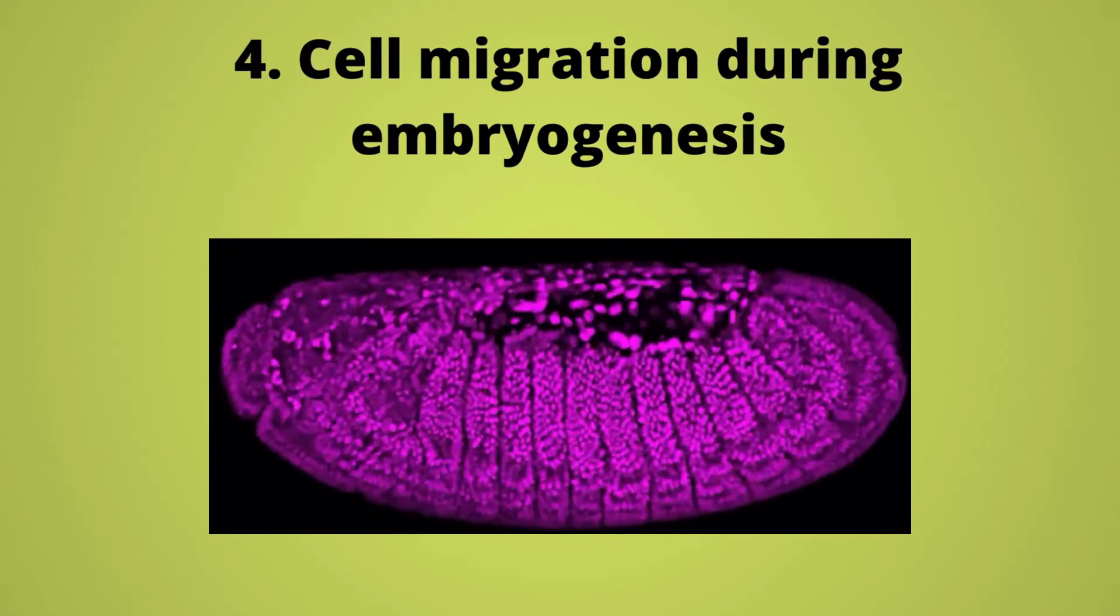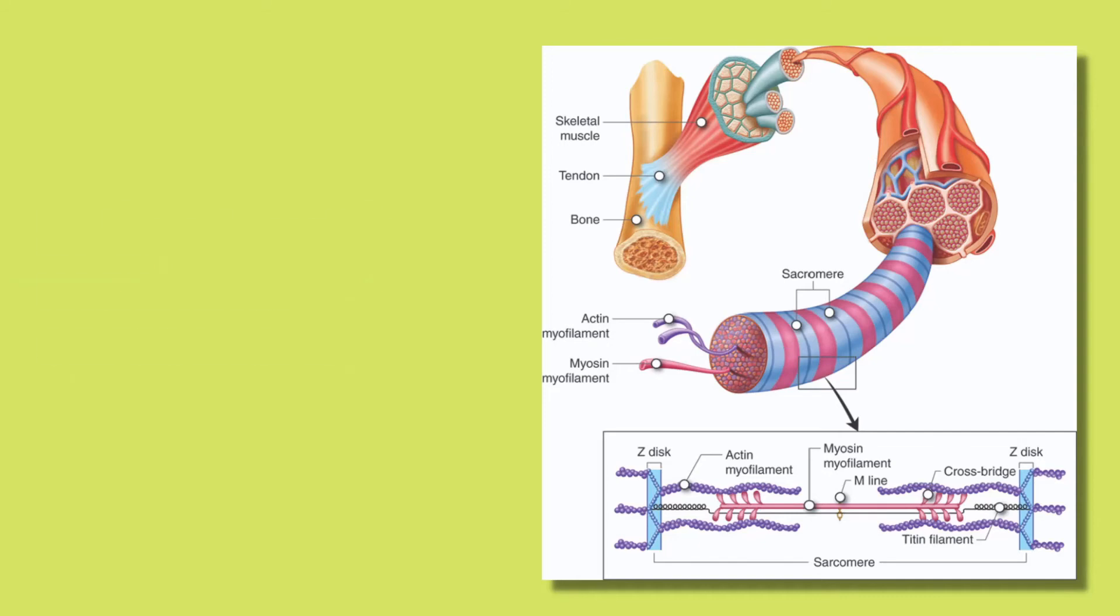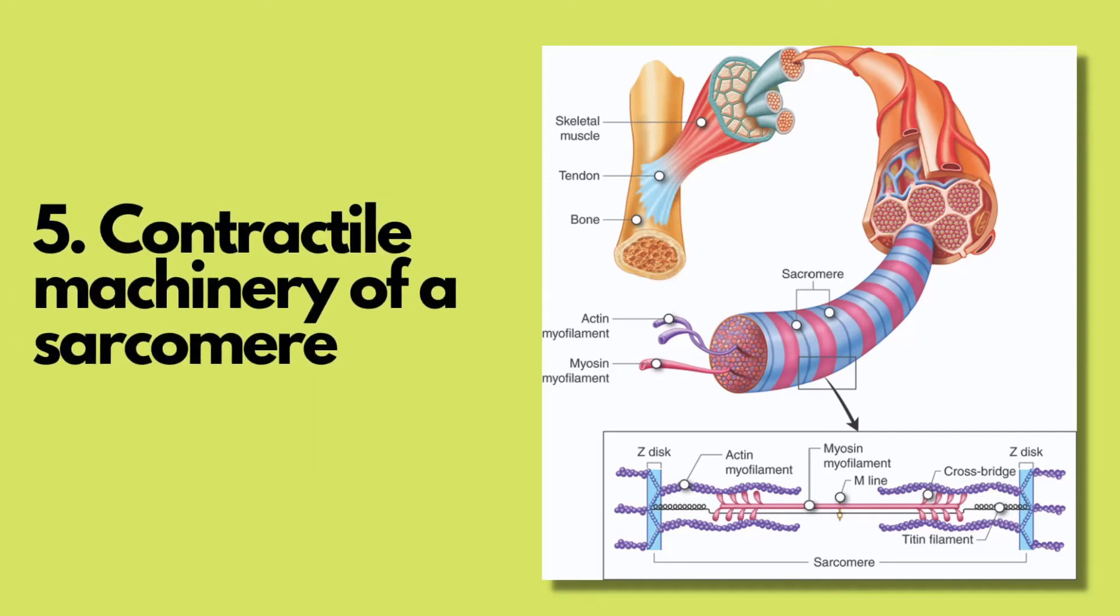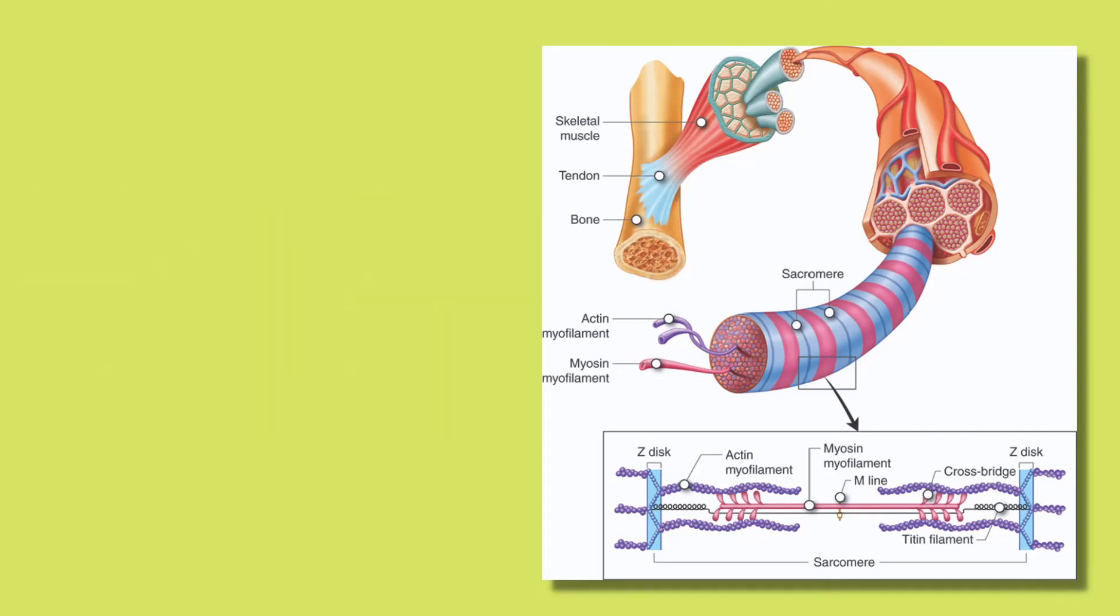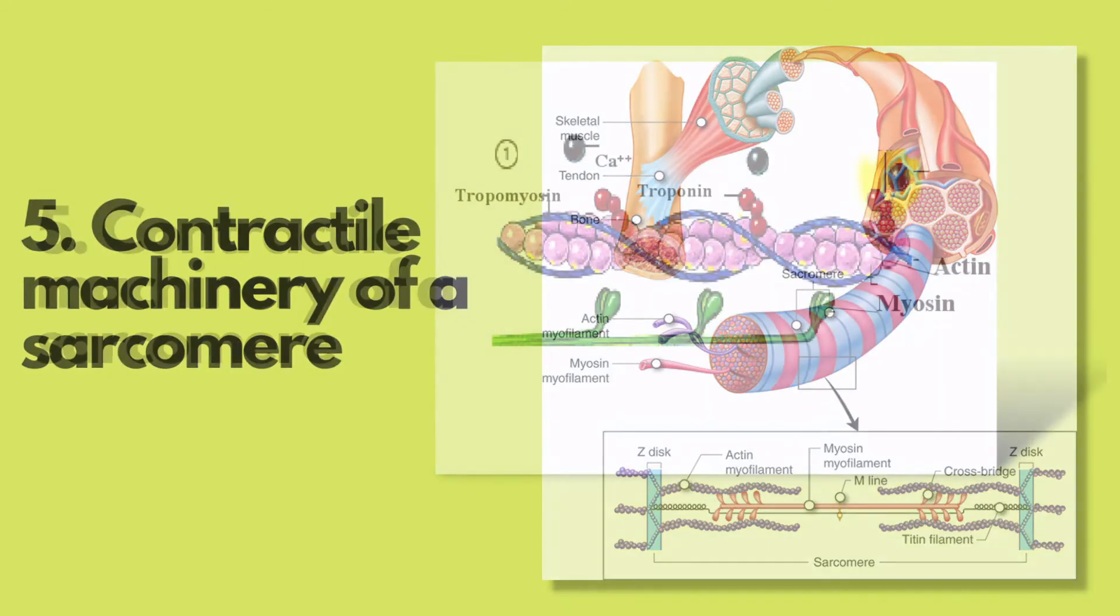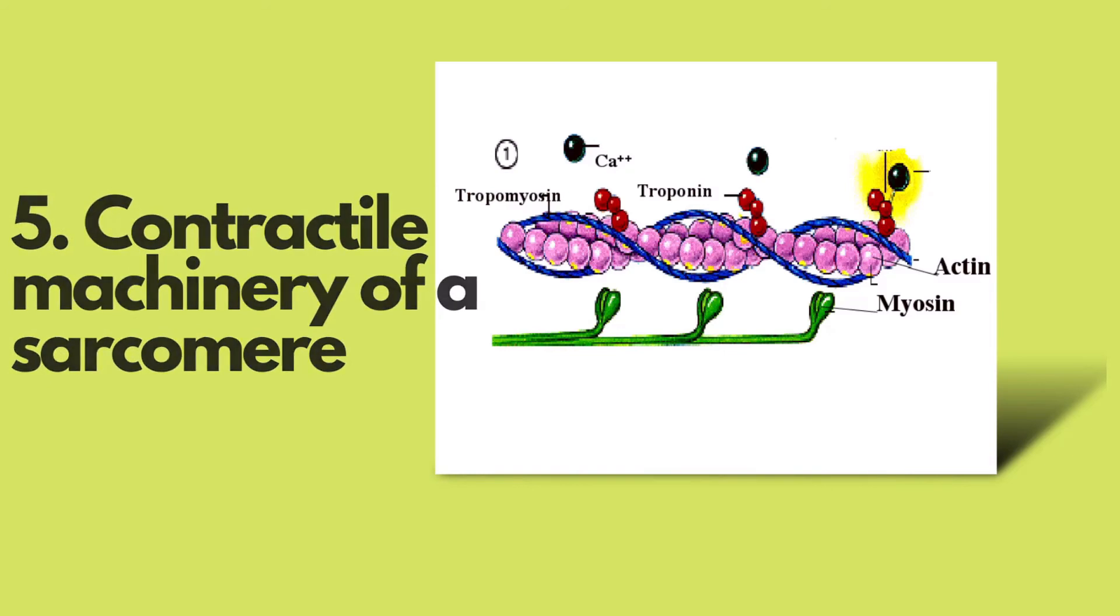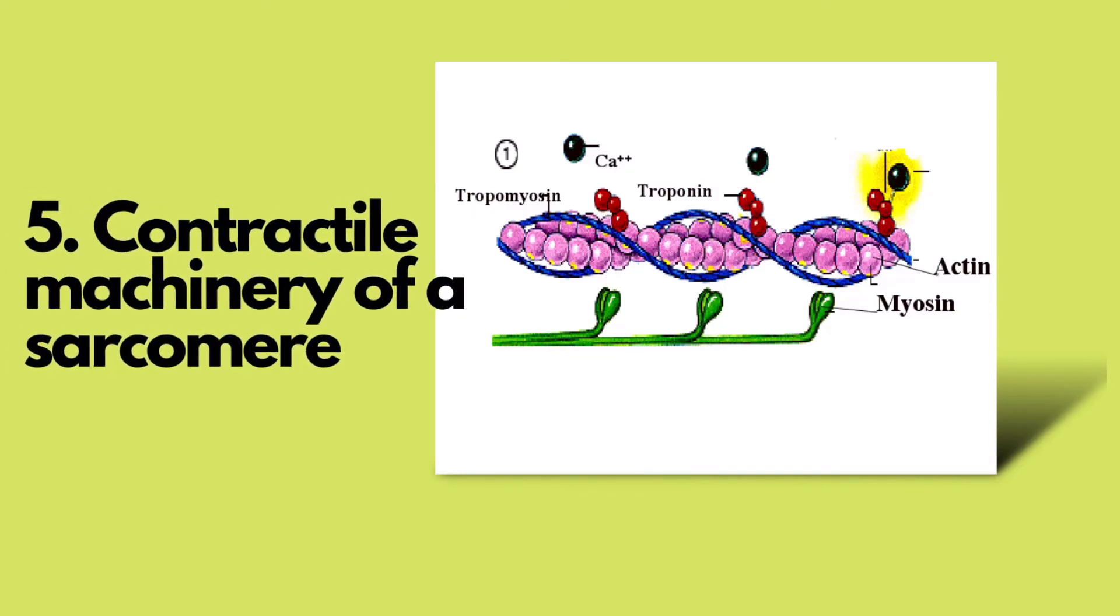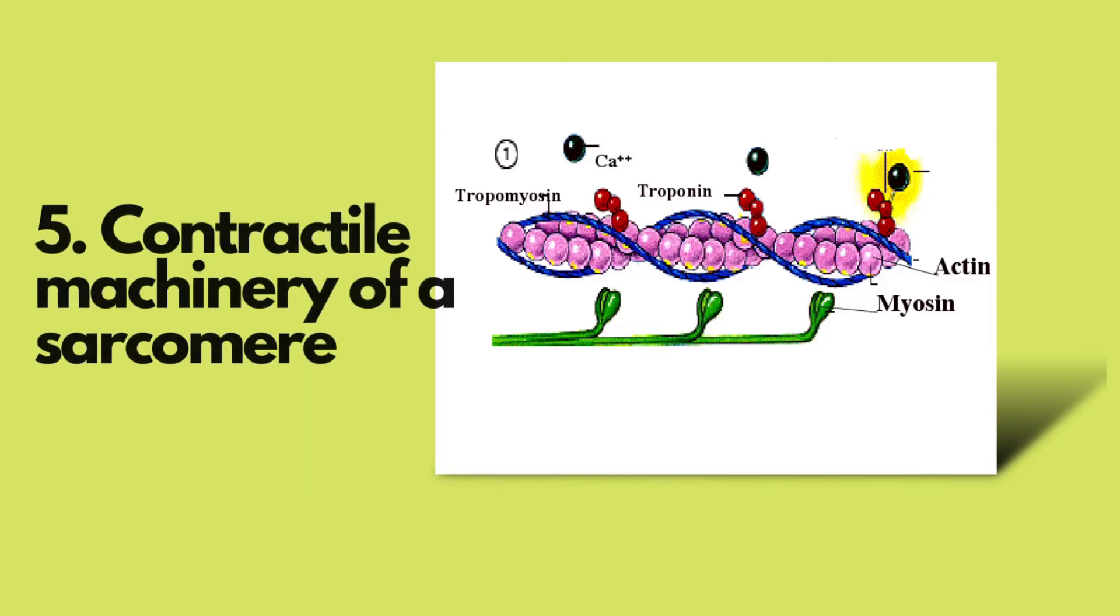The microfilaments or actin filaments along with the myosin fibers are an important component of the myofibril and hence play a vital role in the contraction of skeletal muscle cells. When ATP bound myosin head of the myosin fiber joins the actin filament to form a cross bridge, this will pull and release the actin filament in a process of molecular contraction.